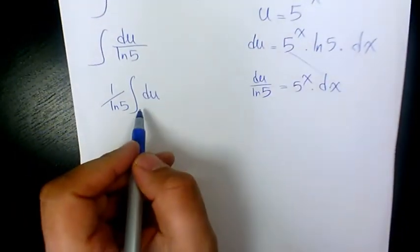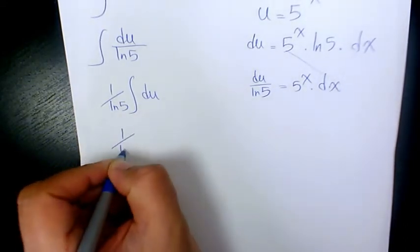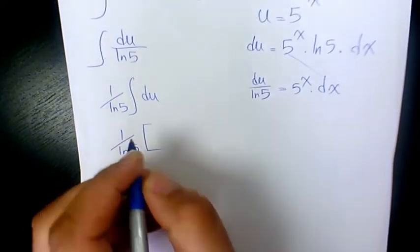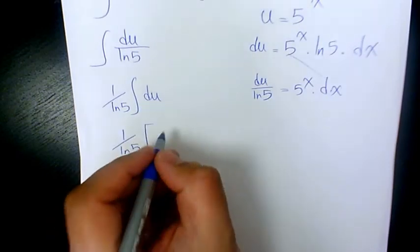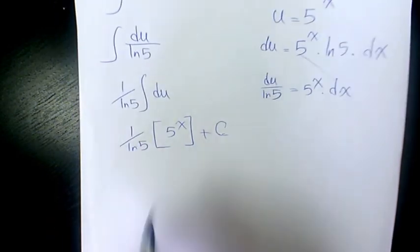And when you find out the integral is going to be just u. So it's going to be 1 over ln 5 times the integral of du is going to be u, which is 5 to the power of x plus a constant number.